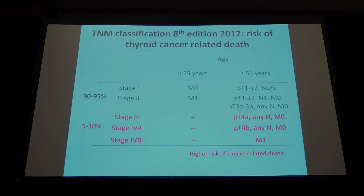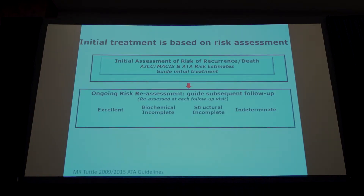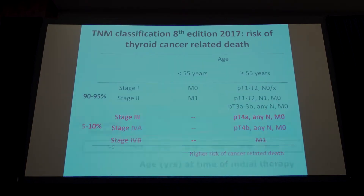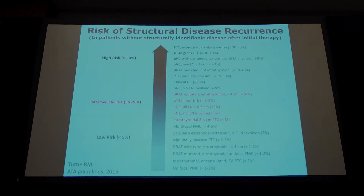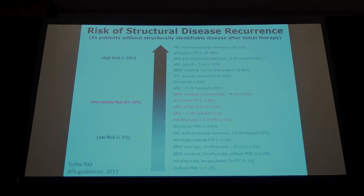The risk of recurrence is much higher than the risk of cancer-related death, as clearly shown by Mazzaferri in all age groups. The ATA risk stratification takes into account tumor size, extent in the neck, and degree of lymph node involvement. Low risk patients have a recurrence risk between 0 and 5%; intermediate risk patients 5 to 20%. High risk patients have persistent disease and should be treated with high activities of radioactive iodine.